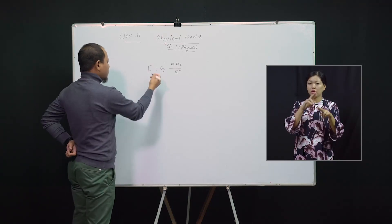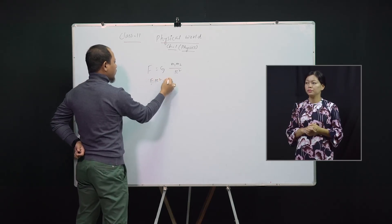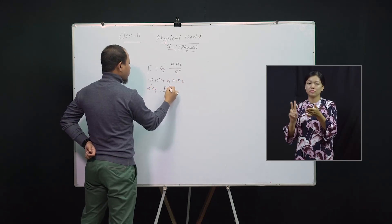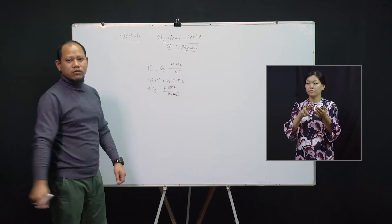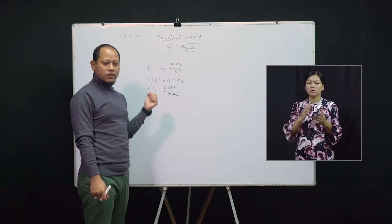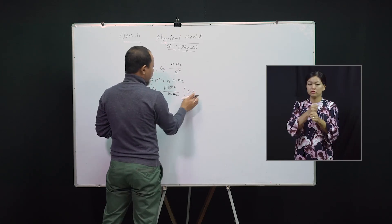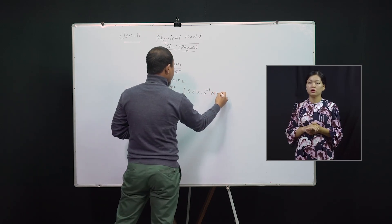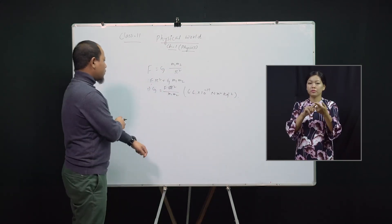Let's find the expression for Z, the universal gravitational constant, by cross multiplication. So F R square equals Z M1 M2, and from here, Z equals F R square divided by M1 M2. The value of Z is 6.6 × 10⁻¹¹ Newton meter square per kg square. This is the value of the universal gravitational constant.